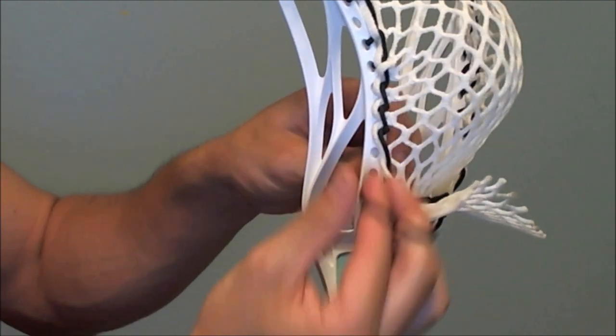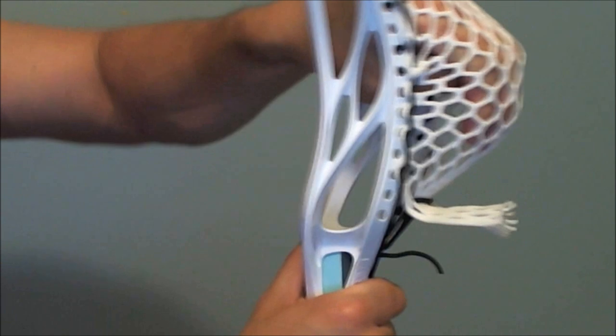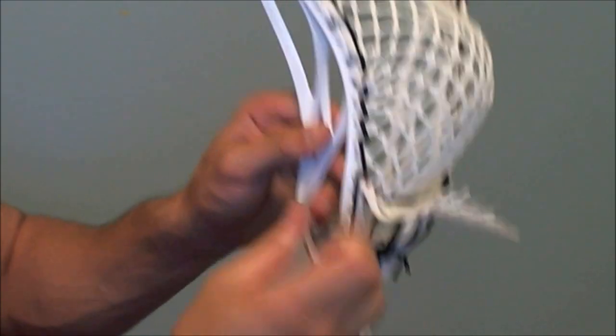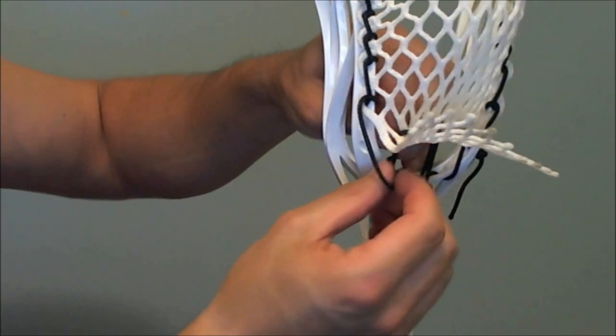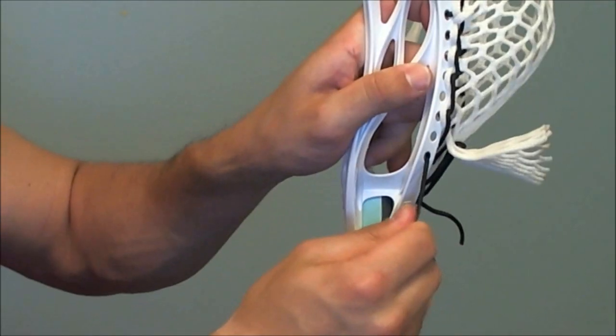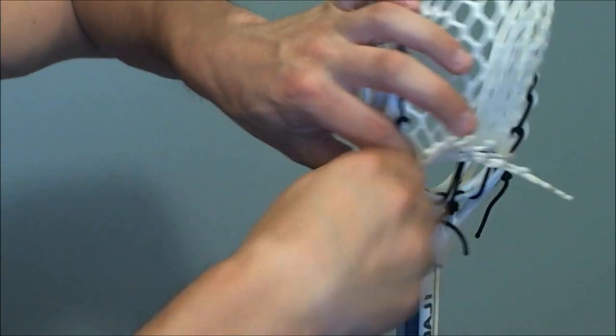You can see that we're going to skip the next sidewall hole just to space that bottom one out a little bit. Keep it from bagging out low. After that final SI, you can just take the string, go back into the inside of the sidewall, come right through, and tie that off.